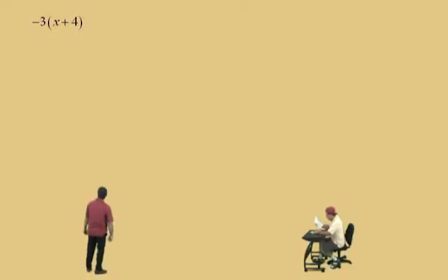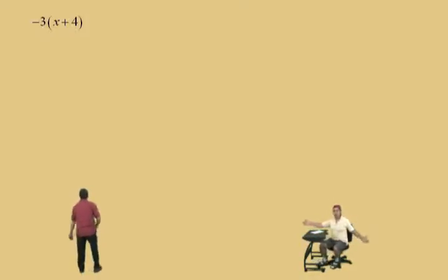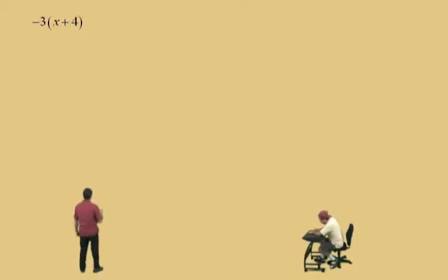Now, we have negative 3 times the quantity x plus 4. Order of operations says we're supposed to do the parentheses first, but you cannot add x plus 4 unless you'd like to repeat the class with him. So, what we have to do is we have to use the distributive property, Charlie. We're going to distribute that negative 3 by multiplication into the parentheses.